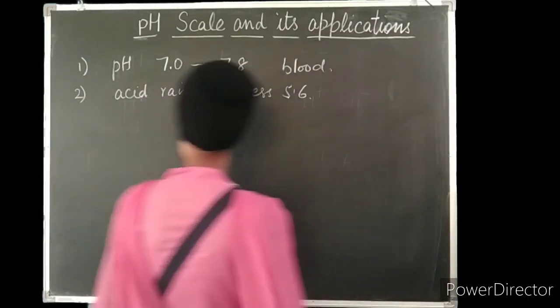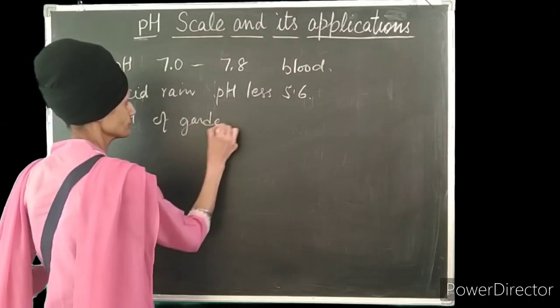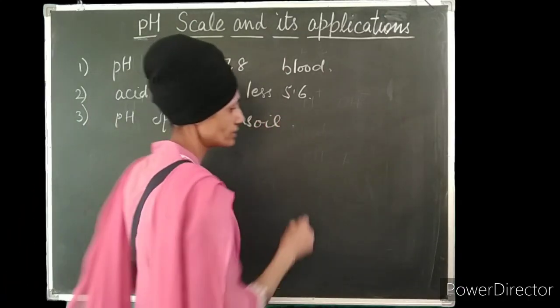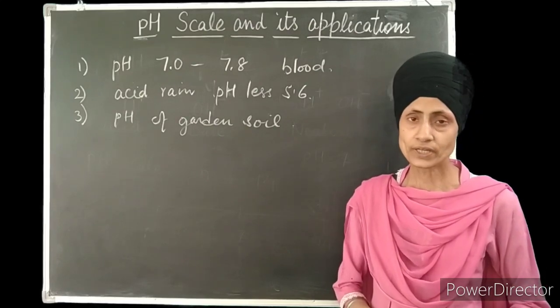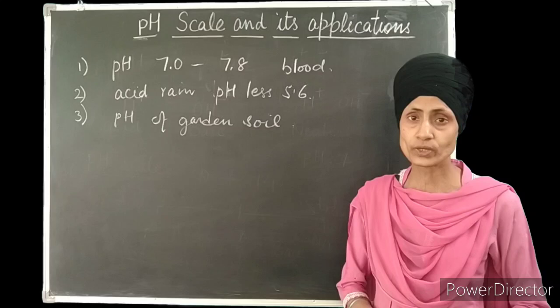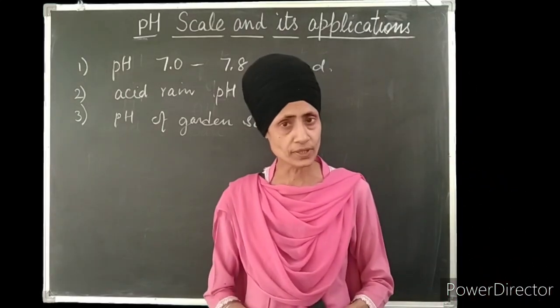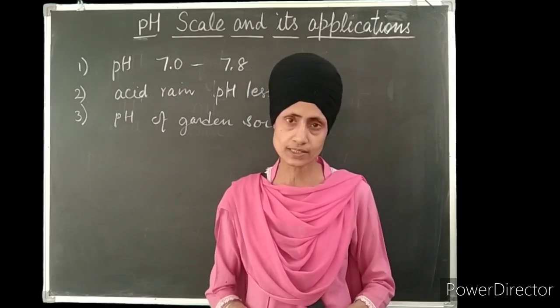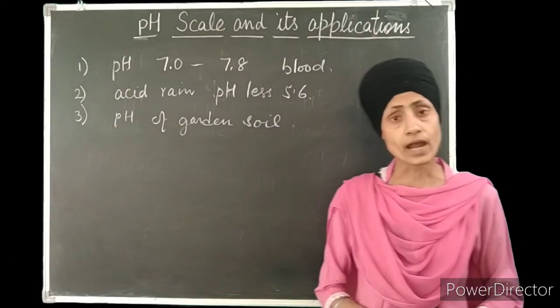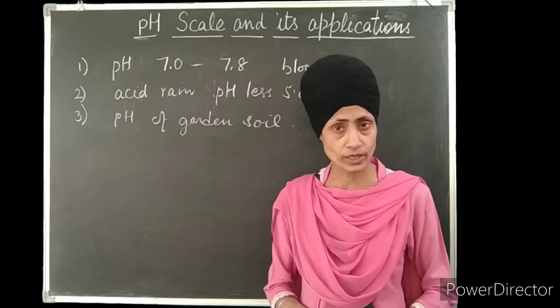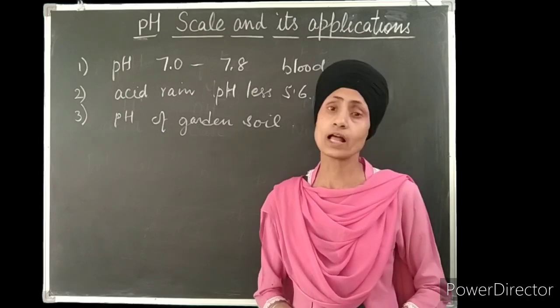Now if we know the pH of our garden soil, we can come to know whether the plants will have a healthy growth in it or not. Actually, the pH range of the soil should be between 6 to 7 for the plant to grow healthier. If the pH of the garden soil is less than 6, it is acidic in nature. So its acidic nature has to be neutralized by adding something basic like calcium carbonate or limestone or magnesium carbonate so that plants can lead a healthier life.